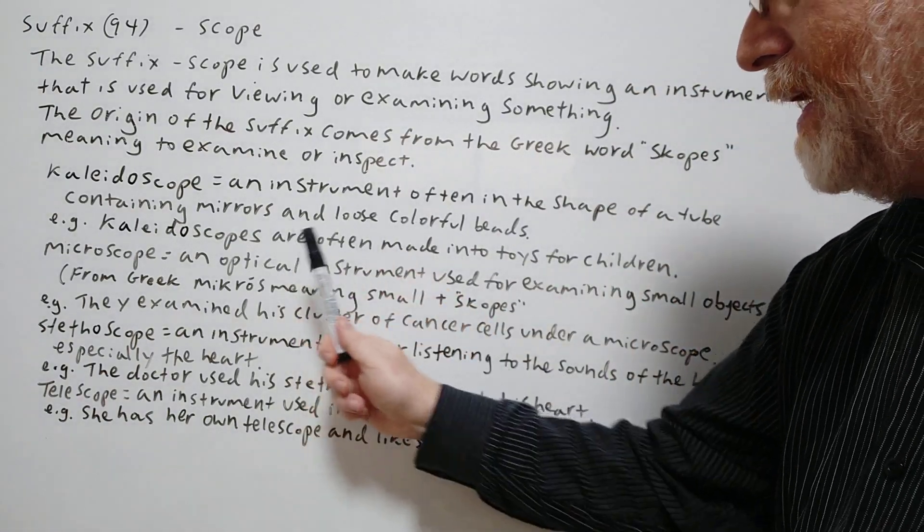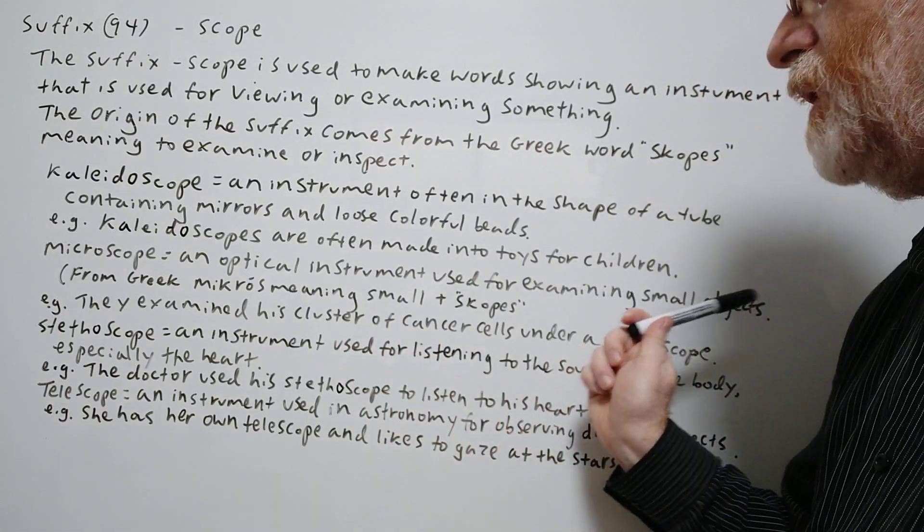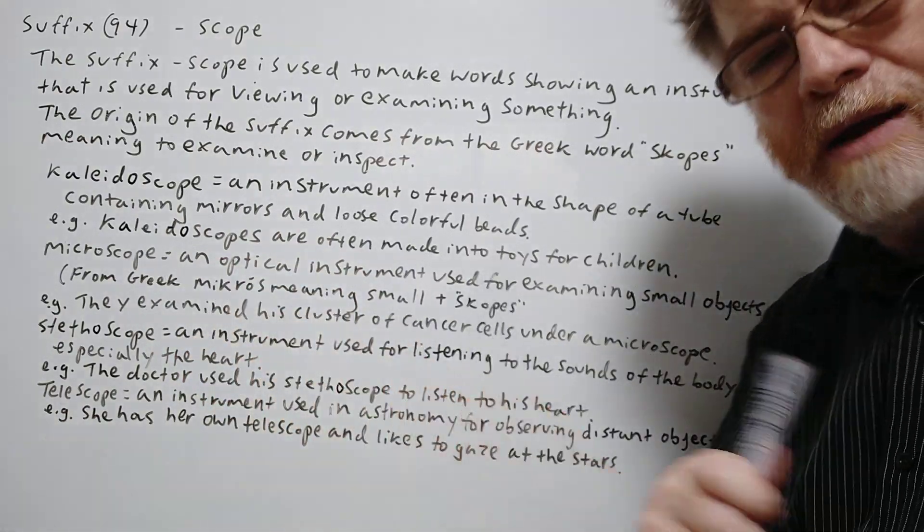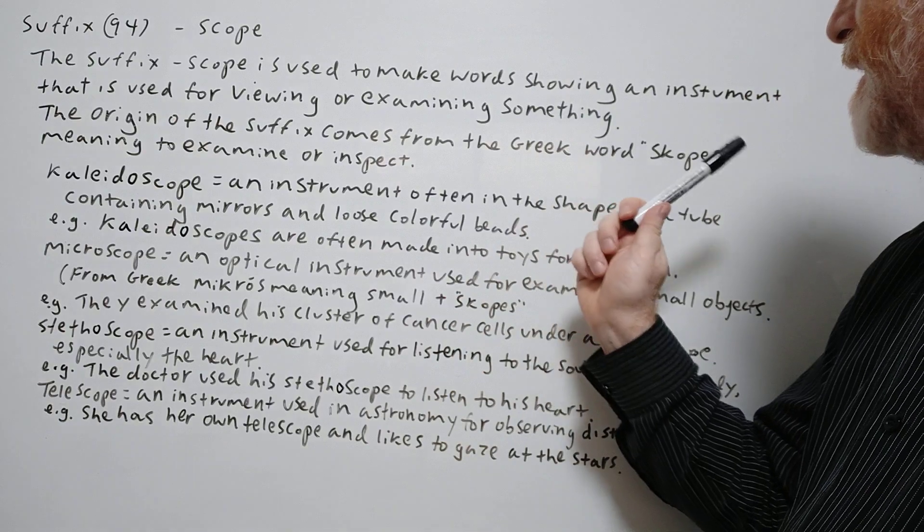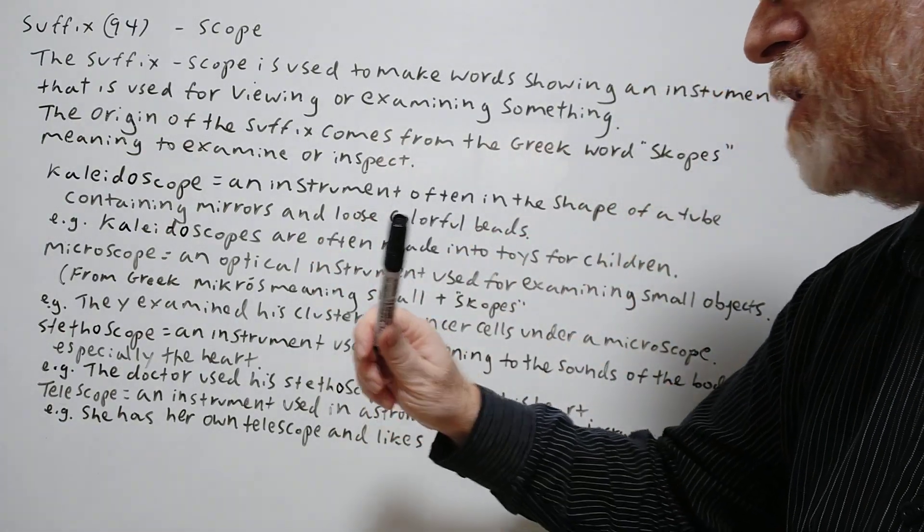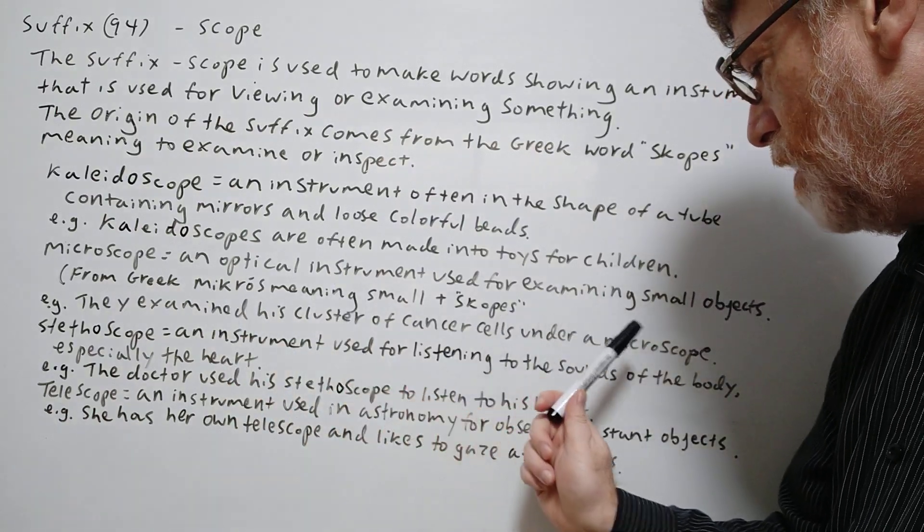The next one. Microscope. An optical instrument used for examining small objects. And this actually comes from Greek mikros meaning small plus the scopes for examining or inspecting something. Here's our example. They examined his cluster of cancer cells under a microscope.